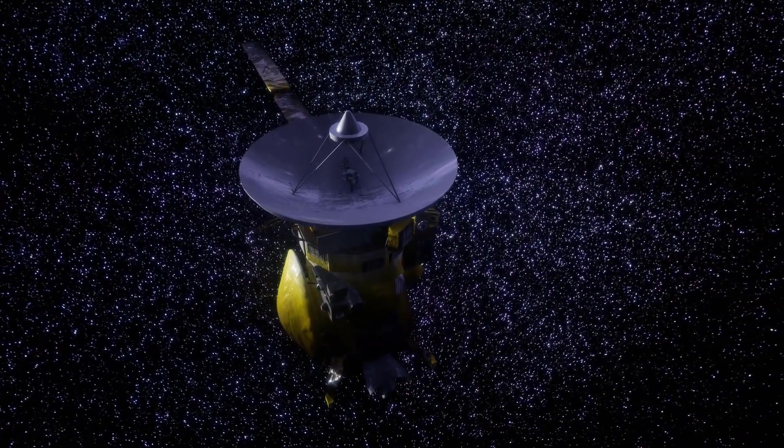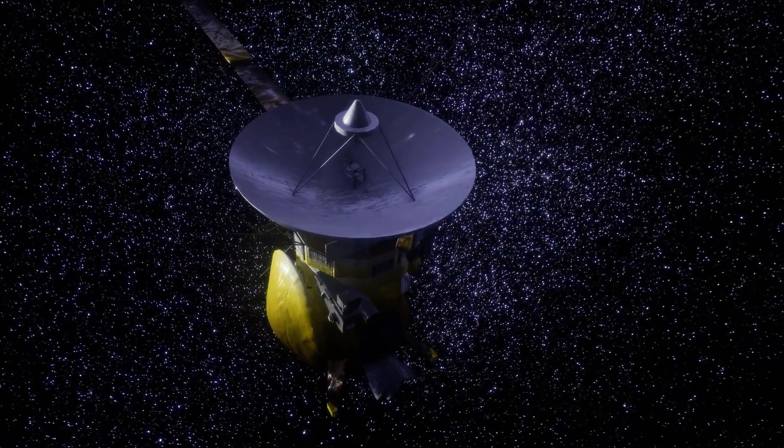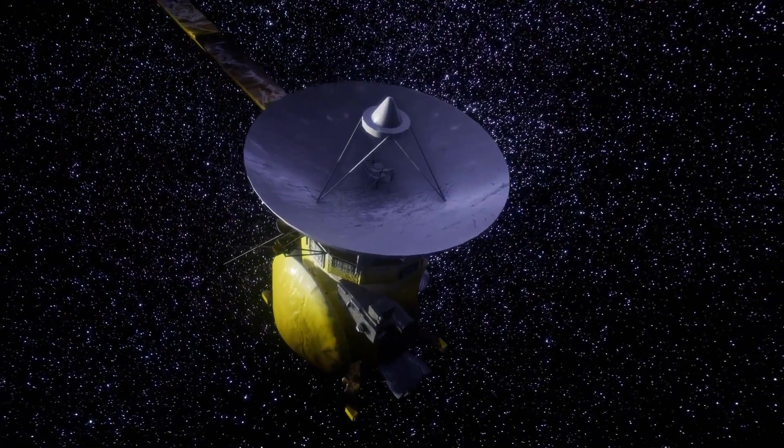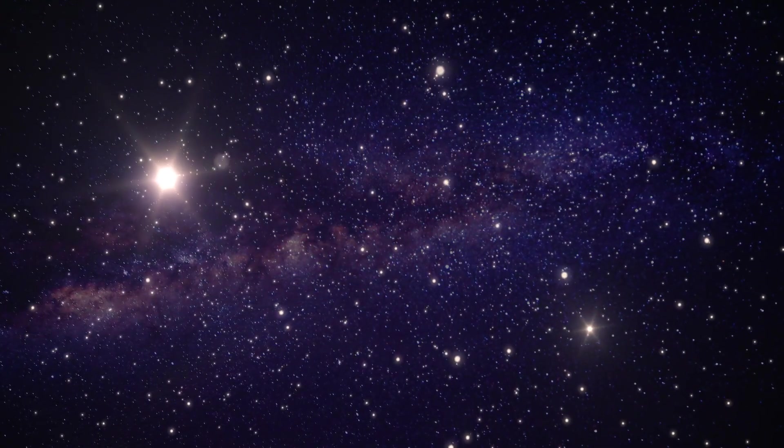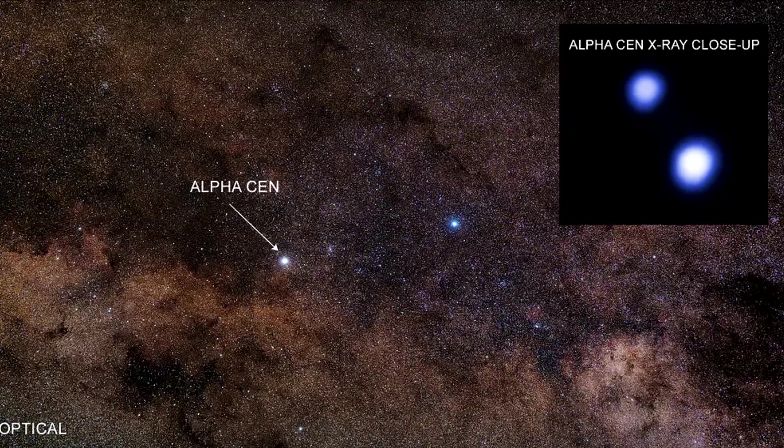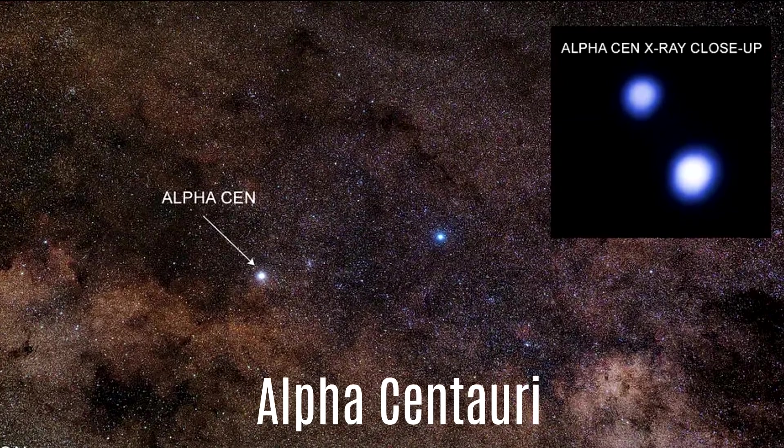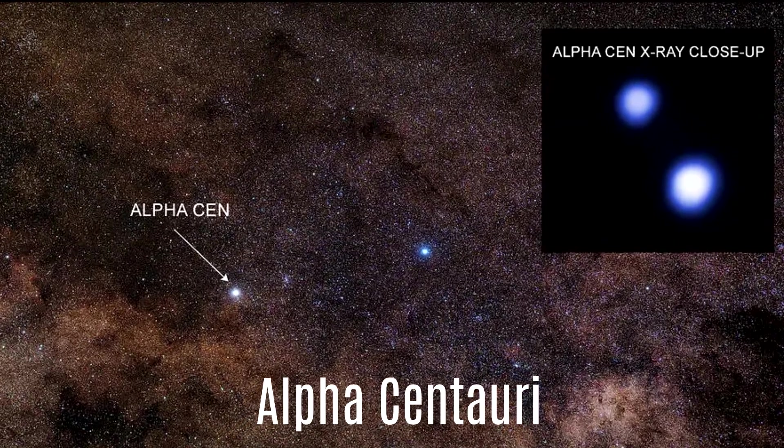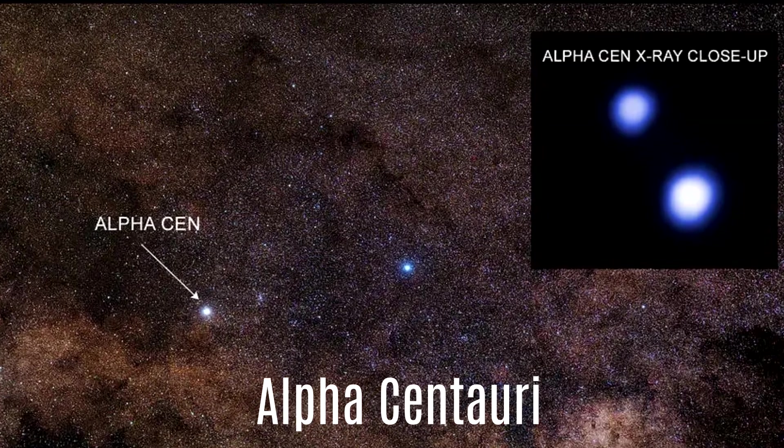If that same probe tried to cross a light year, it'd take a staggering 20,000 years. But here's the kicker. There's no star just one light year away from us. The nearest star, Alpha Centauri, is a whopping 4 light years away. Can you believe the odds stacked against us for interstellar travel?